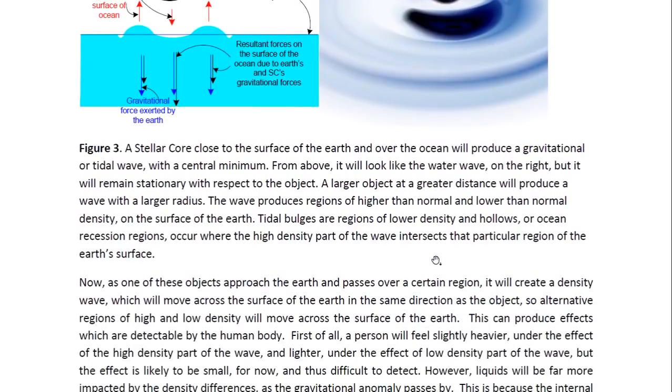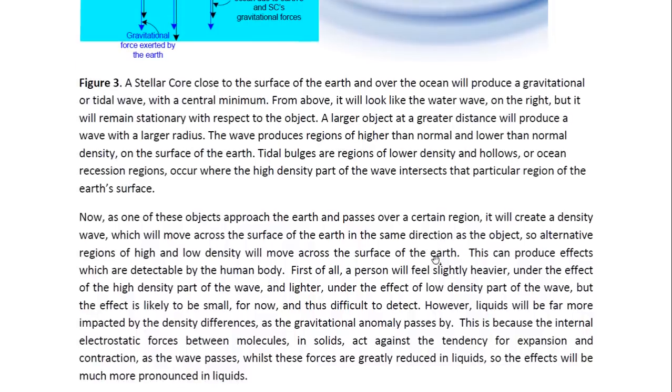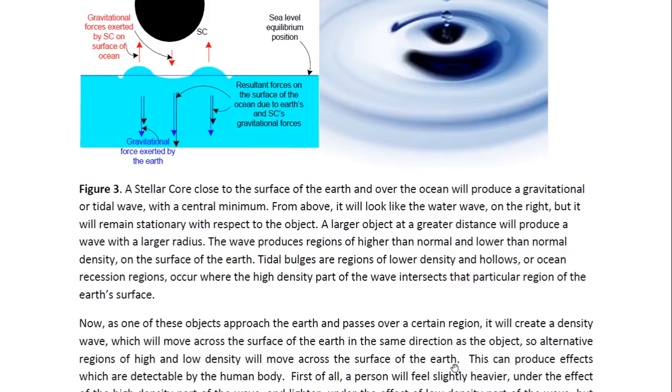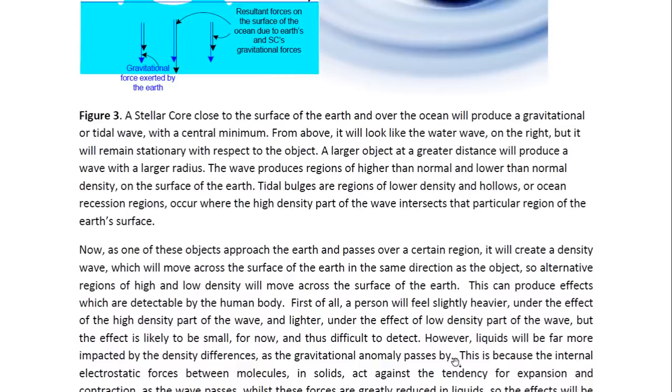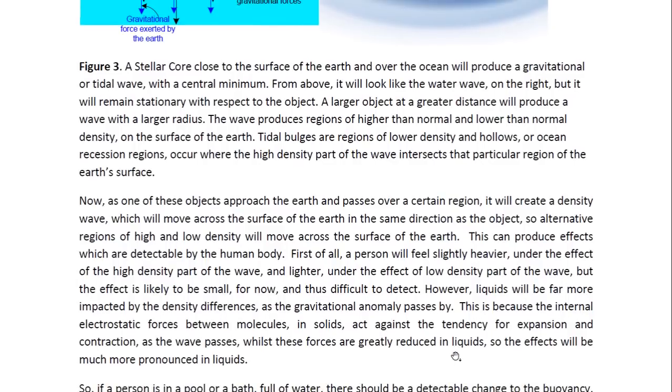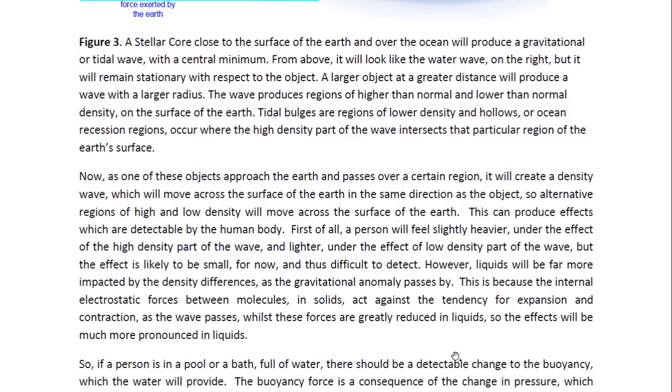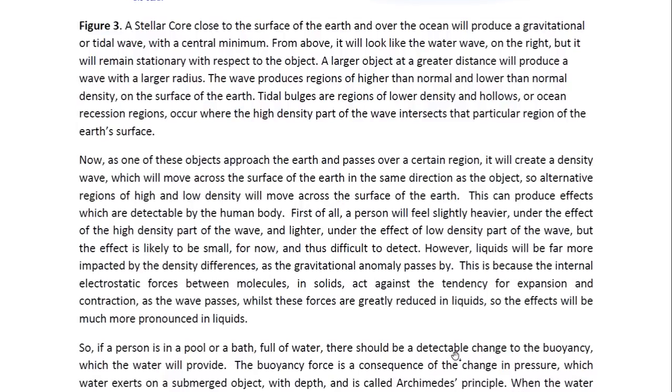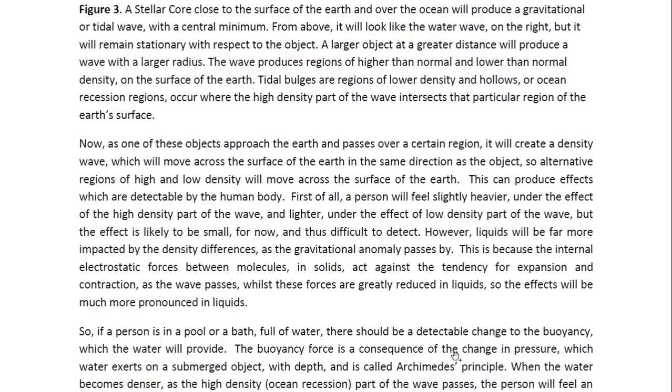As one of these objects approach the Earth and passes over a certain region, it will create a density wave which will move across the surface of the Earth in the same direction as the object. So alternative regions of high and low density will move across the surface of the Earth. This can produce effects which are detectable by the human body. First of all, a person will feel slightly heavier under the effect of the high density part of the wave and lighter under the effect of the low density part of the wave. But the effect is likely to be small for now, and thus difficult to detect. However, liquids will be far more impacted by the density differences as the gravitational anomaly passes by. This is because the internal electrostatic forces between molecules in solids act against the tendency for expansion and contraction as the wave passes, whilst these forces are greatly reduced in liquids, so the effects will be much more pronounced in liquids.